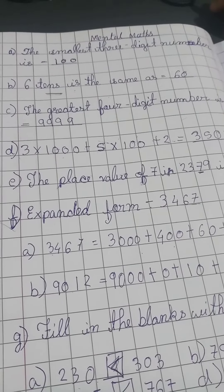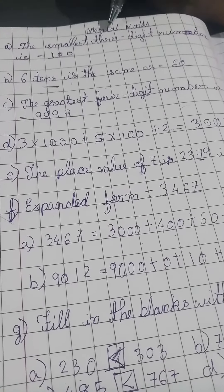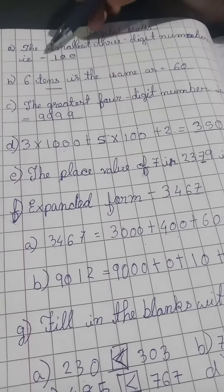Today we will do some mental maths. The smallest 3-digit number is 100.